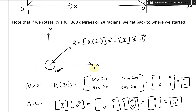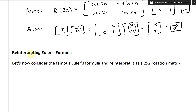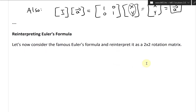Now we've covered all this, let's do some interesting stuff with what we've learned. So reinterpreting Euler's formula — let's consider the famous Euler's formula by Leonard Euler and reinterpret it as a 2 by 2 rotation matrix.